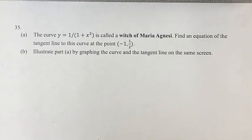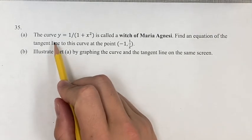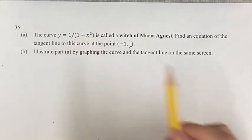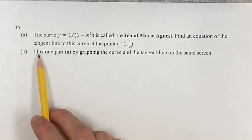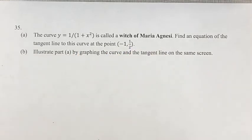Hello, and welcome back to another video. This problem we're dealing with the function y equals 1 over 1 plus x squared. And firstly, we're going to look to find an equation of the tangent line to this curve at the point negative 1, 1 half.